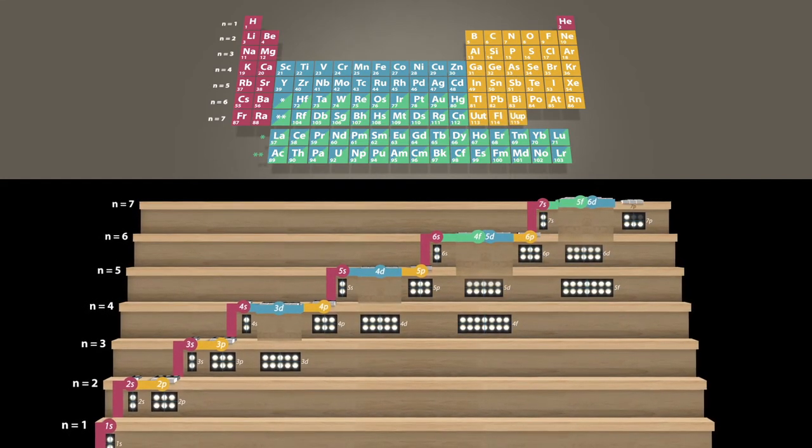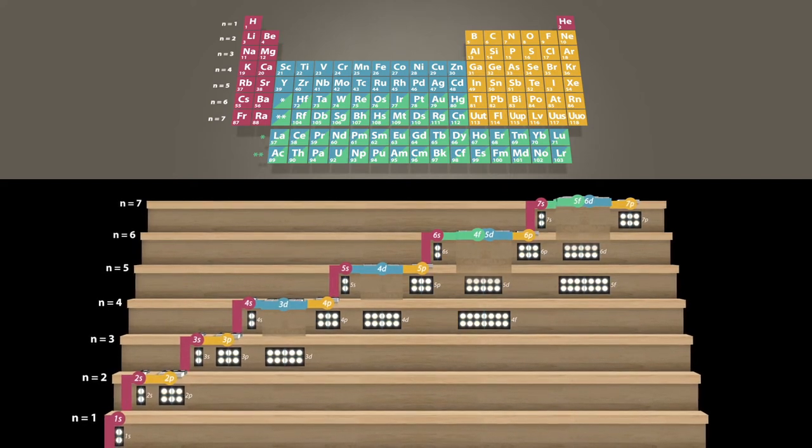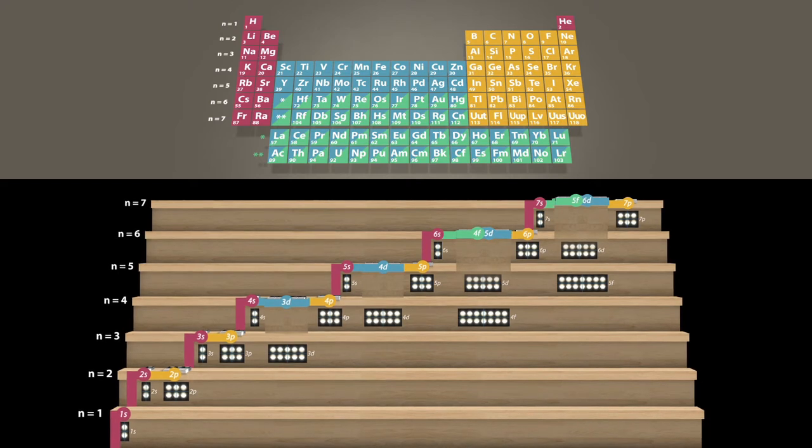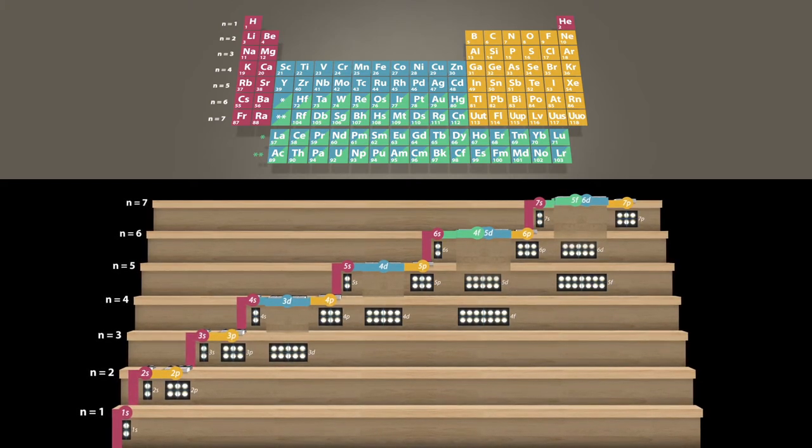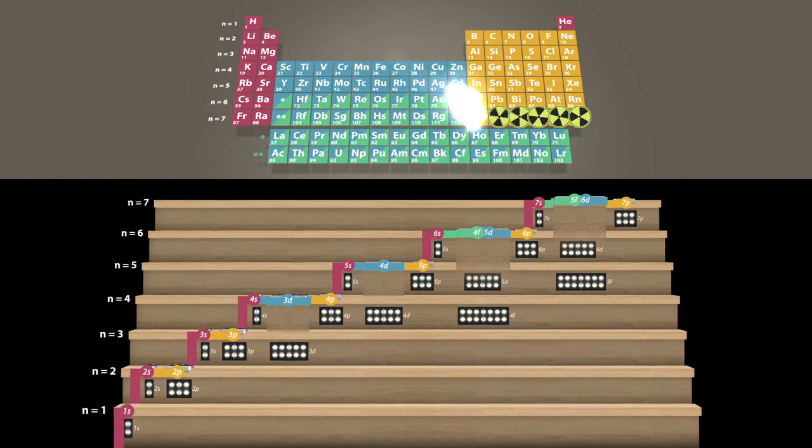Finally, the 6 states of the 7p orbital are filled. The elements 113 to 118 of the periodic table are thus complete. None of these elements has stable isotopes. They all decay radioactively within a short time.